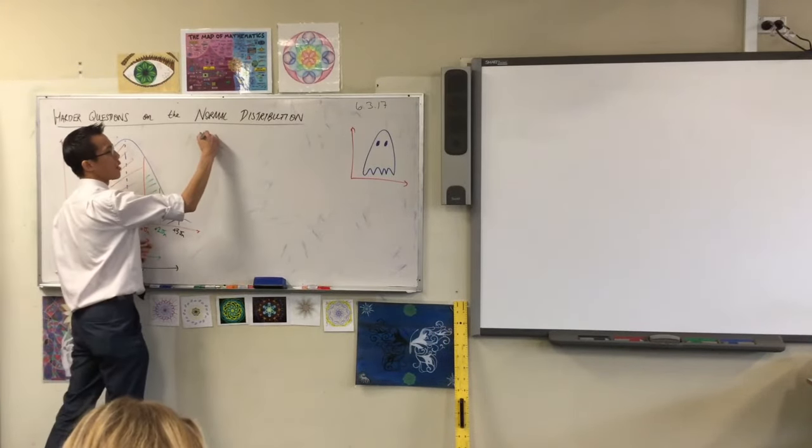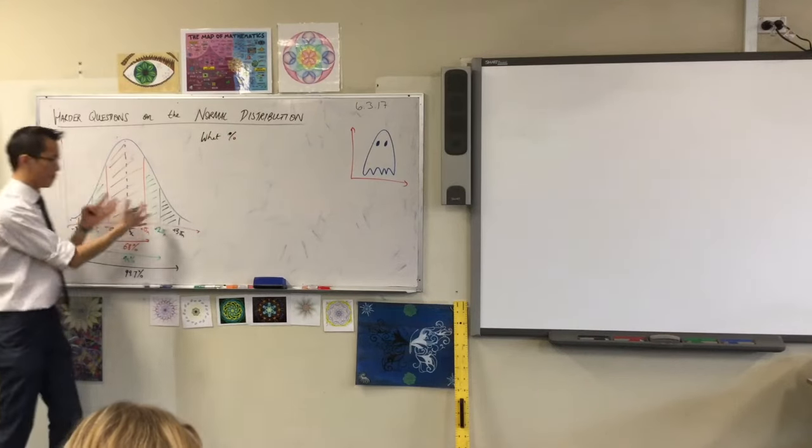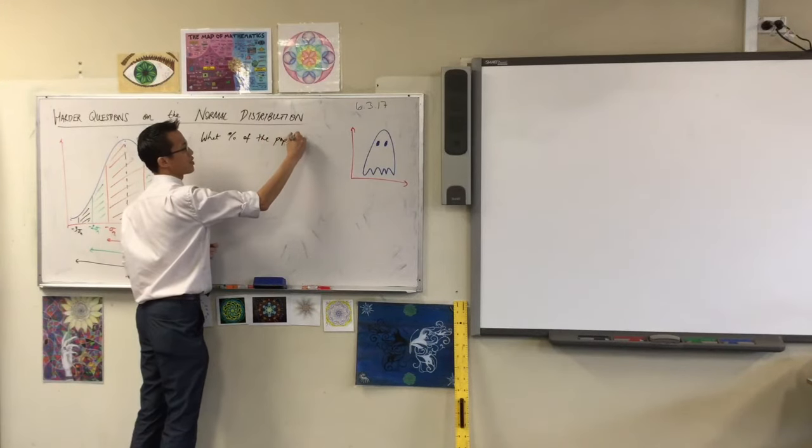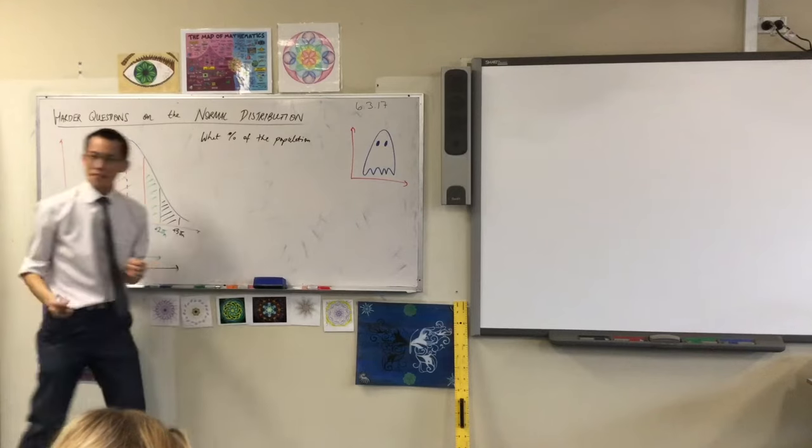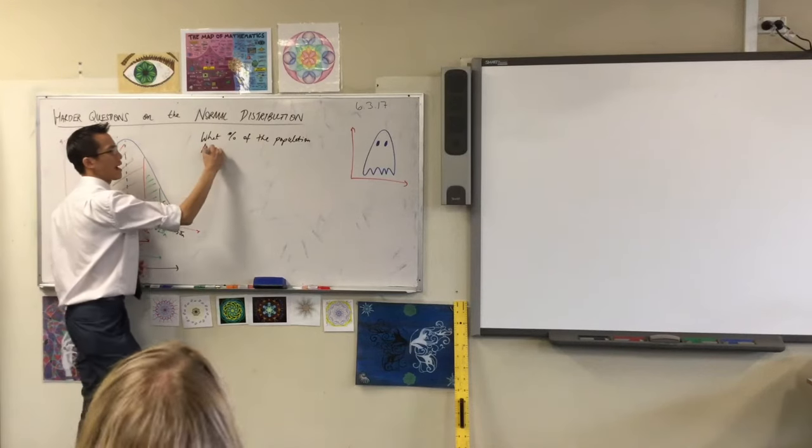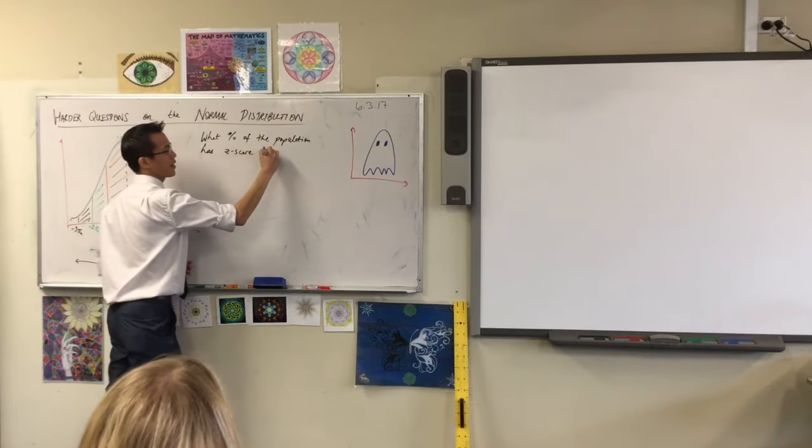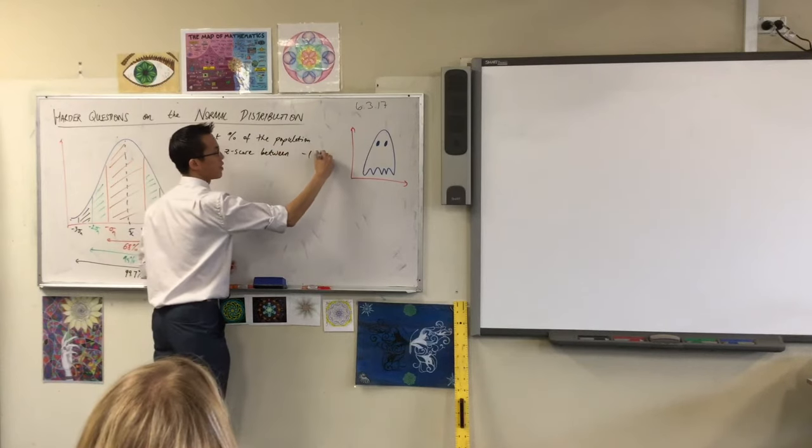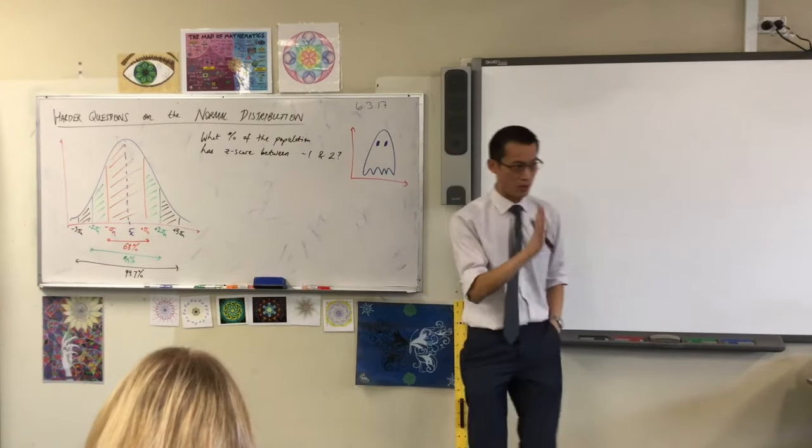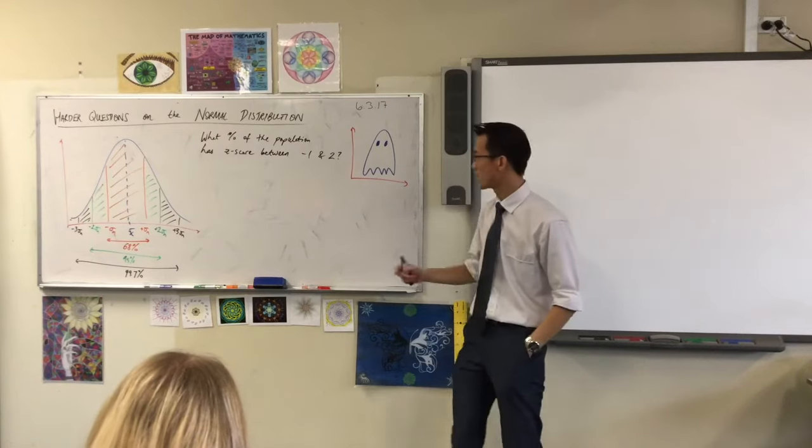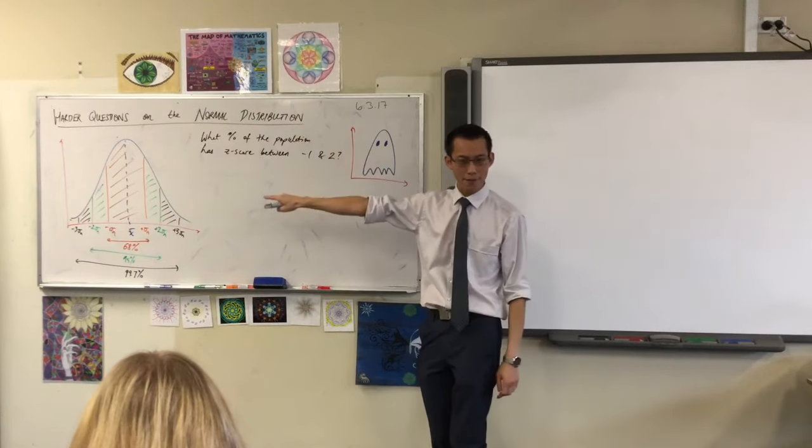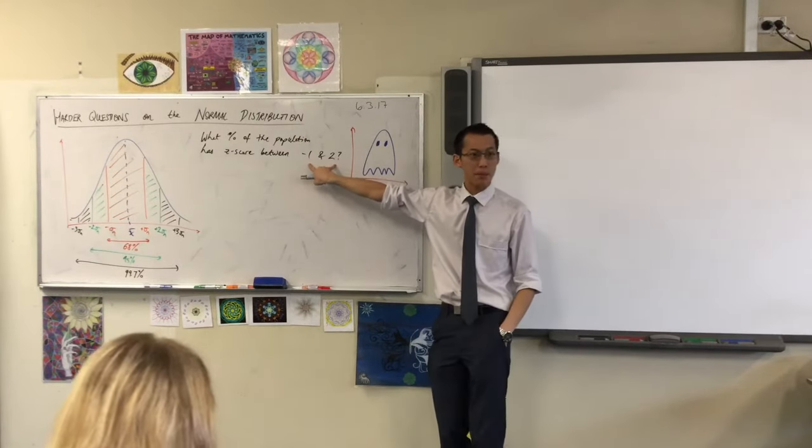So here's a question that they might pose to you. Here's the actual wording: what percentage of a population in a normal distribution, what percentage of the population, and then they'll provide you a range of z-scores. So we might say for instance, what percentage of the population has a z-score between, say, negative one and two? So when you have a look at this, we know that z-scores are about how many standard deviations you are away.